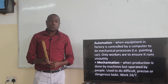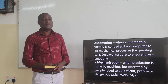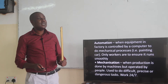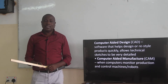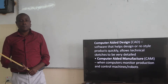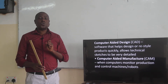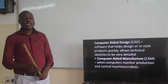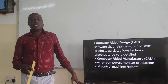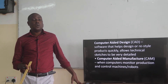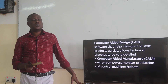Mechanization is used to do difficult, precise, or dangerous tasks, and it can work 24 hours, 7 days a week. Computer-aided design (CAD) is software that helps design or redesign products quickly. It allows technical sketches to be very detailed. We are designing products very quickly by use of software — that is called computer-aided design.